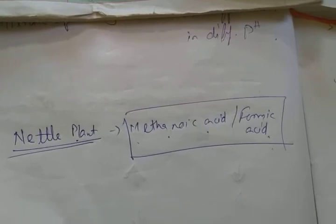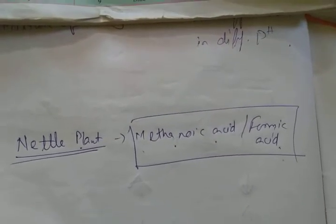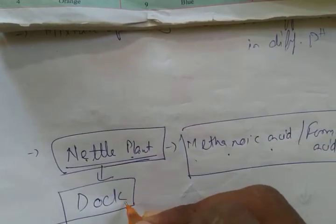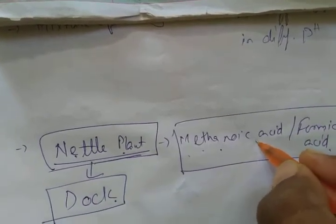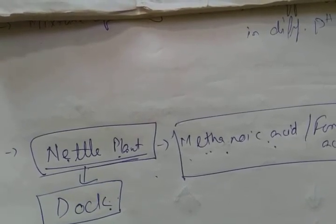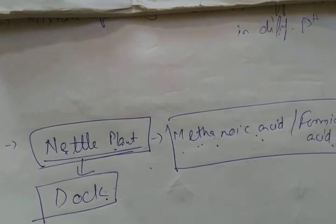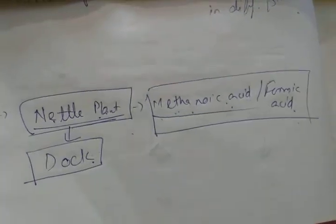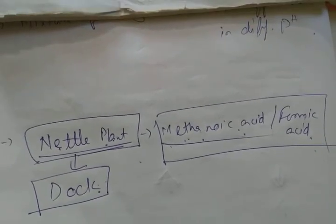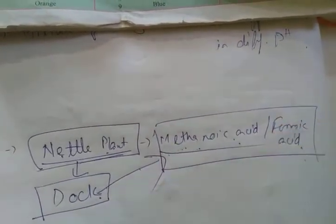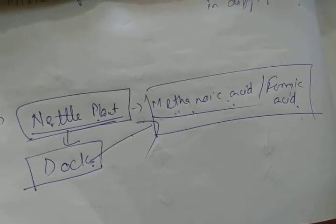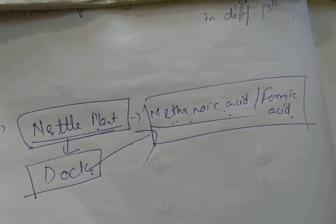Behind every nettle plant there is a dock plant. If methanoic acid is injected into your body through nettle plant, we can use the leaves of dock plant as a remedy. If we rub the dock plant on the skin where methanoic acid was injected, the effect of methanoic acid will be neutralized.